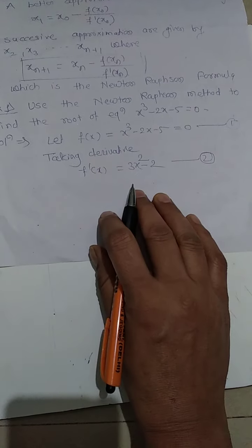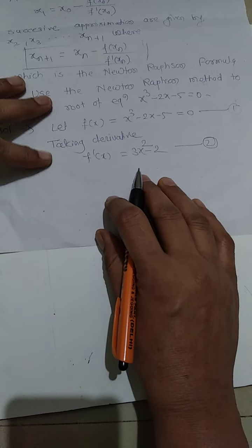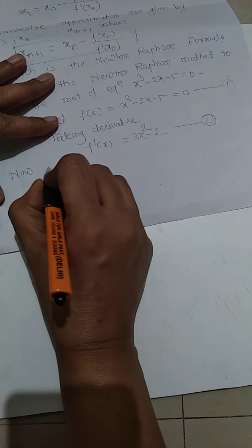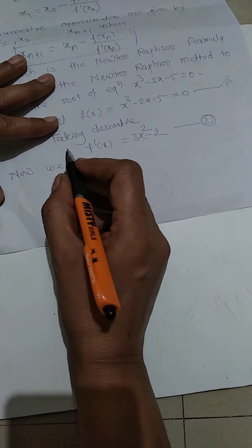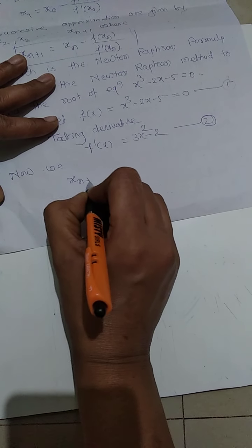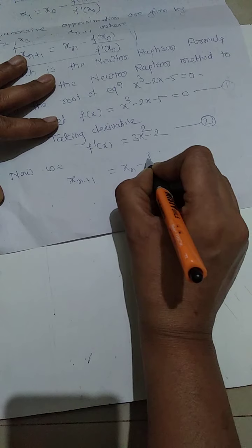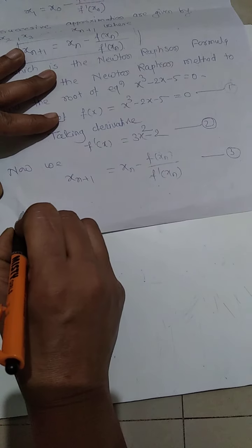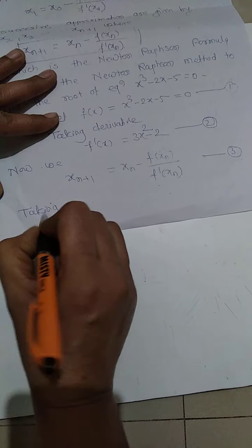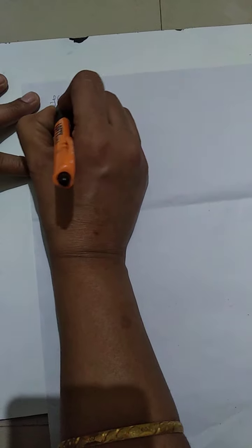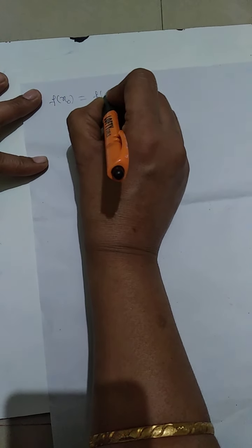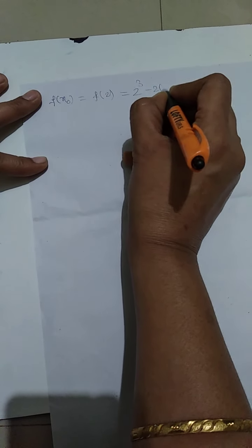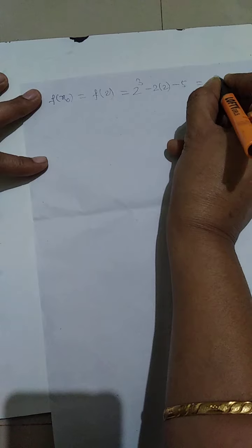Taking the derivative, f'(x) = 3x² - 2. That is equation number 2. The Newton-Raphson formula is xₙ₊₁ = xₙ - f(xₙ)/f'(xₙ). Taking x₀ = 2, f(x₀) = f(2) = 2³ - 2(2) - 5 = 8 - 4 - 5 = -1.